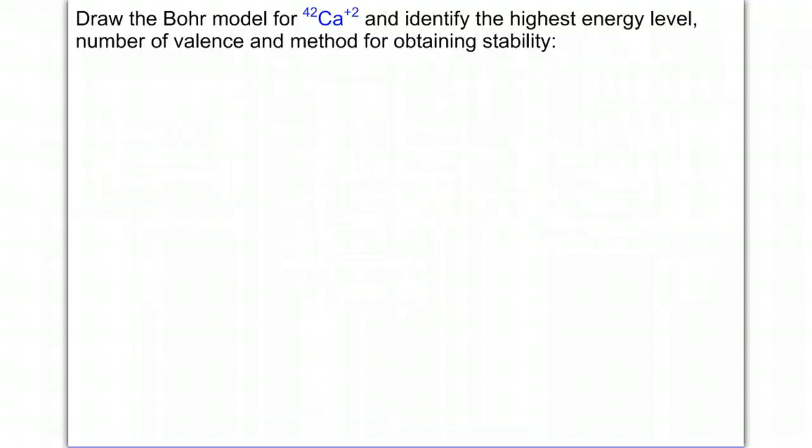Calcium. And this one has a plus 2 charge. So we have 42Ca. Calcium has an atomic number of 20, and this one has a plus 2. So that's going to give us 20 protons, 22 neutrons, and 20 minus 2 equals 18 electrons. So let's draw our nucleus, 20 protons, 22 neutrons.